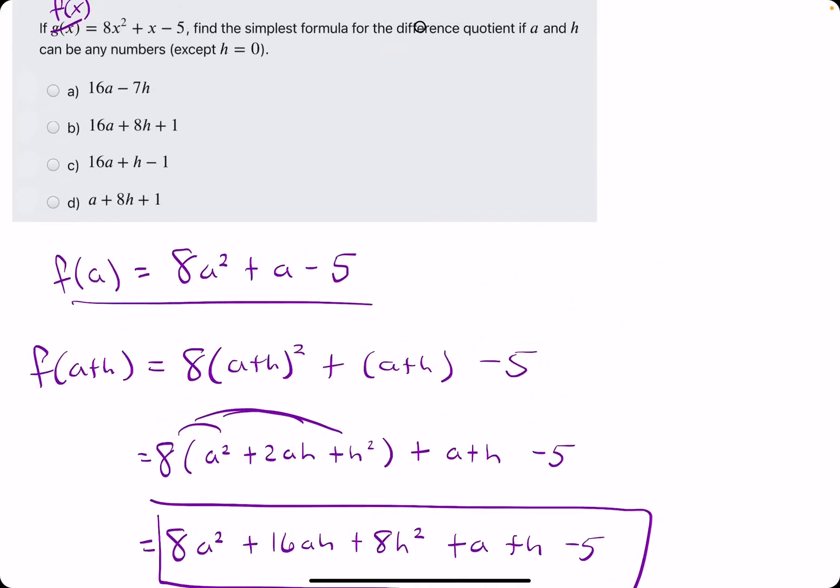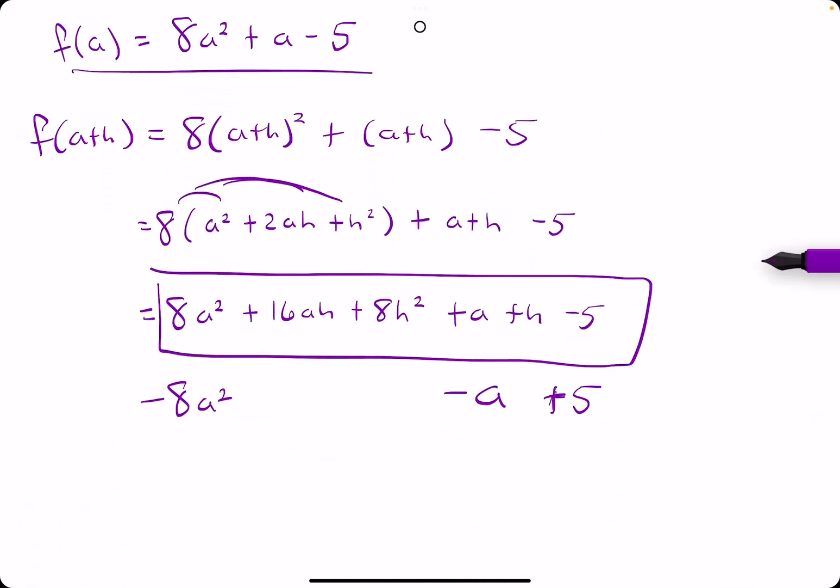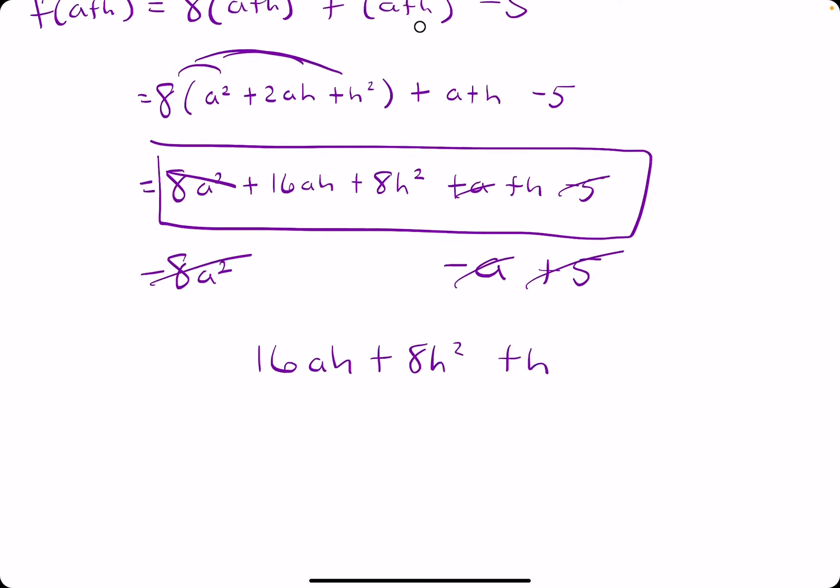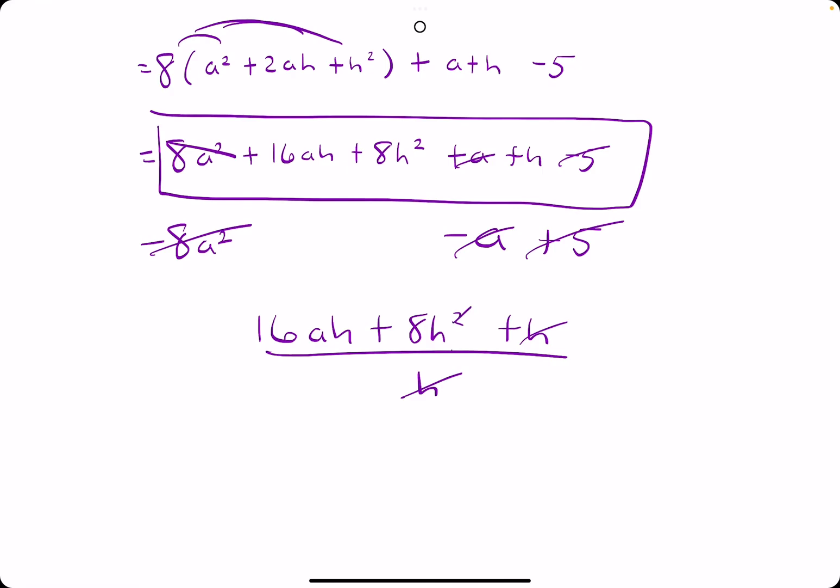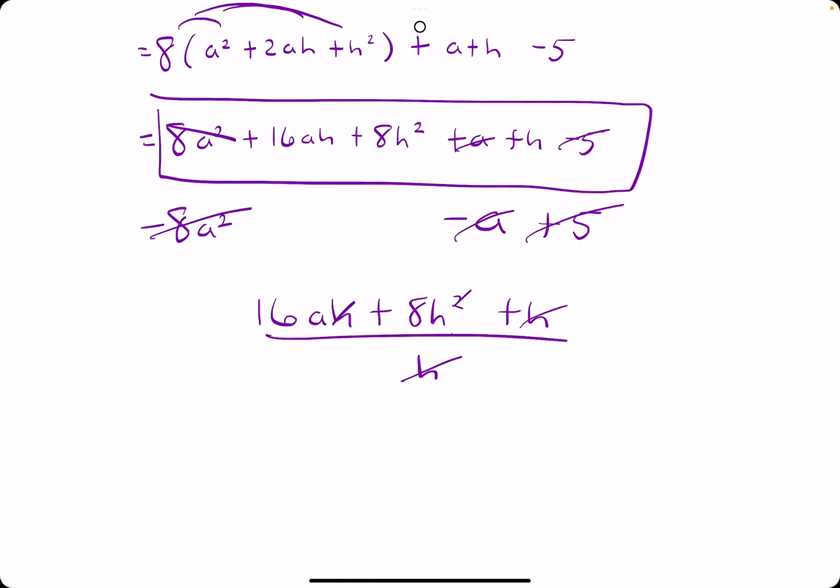And so, why did I make this a plus 5? I made it a plus 5 because originally it was a minus 5. But we are subtracting that minus 5. So, it becomes a plus. And so, we have 8a² canceling. We have a's canceling. We have negative 5 canceling with positive 5. And what are we left with? 16ah plus 8h² plus h. Still all over h. And then we can cancel an h from each of these. When we cancel an h from this last h here, keep in mind, there's basically, it doesn't all just go away, but it leaves us with a one. So, what we're left with is 16a plus 8h plus one.